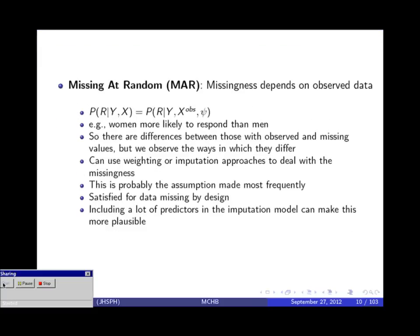A more plausible missing data mechanism is missing at random (MAR), where the missingness depends on things that we observe. For example, you might observe gender for everyone and see that women are more likely to answer some question than men. Because the missingness depends on observed things, there may be differences between people with observed and missing values, but we observe the ways in which they differ and can therefore adjust for that. This is the mechanism where we use weighting or imputation approaches, and it's what we'll be talking much more about today. You can actually make MAR more plausible by including a lot of variables in your models and imputation procedure.